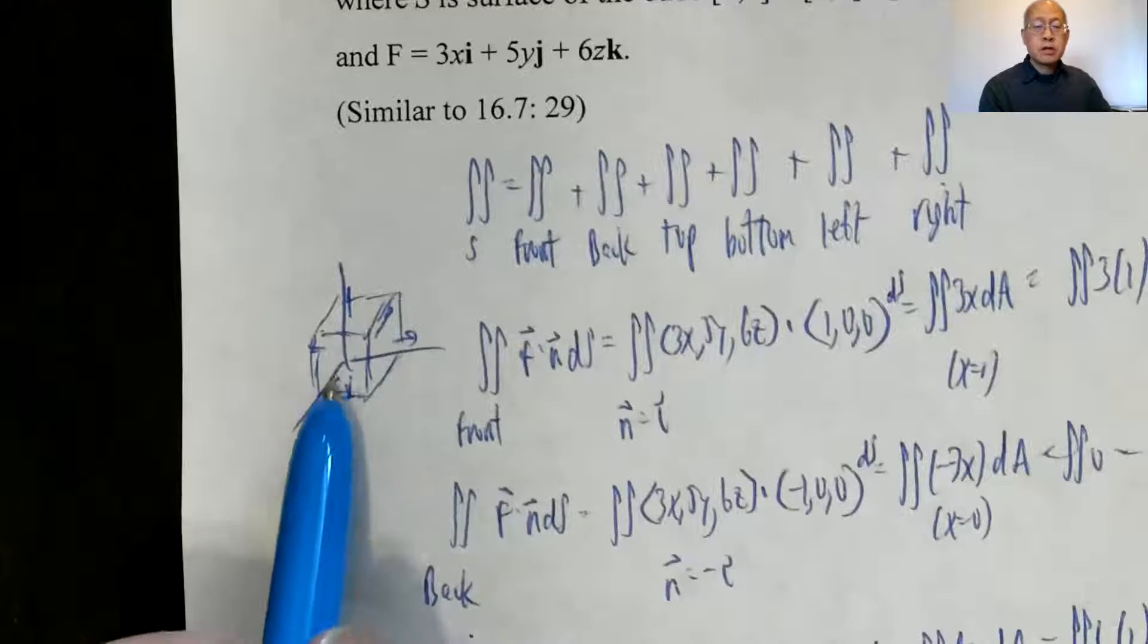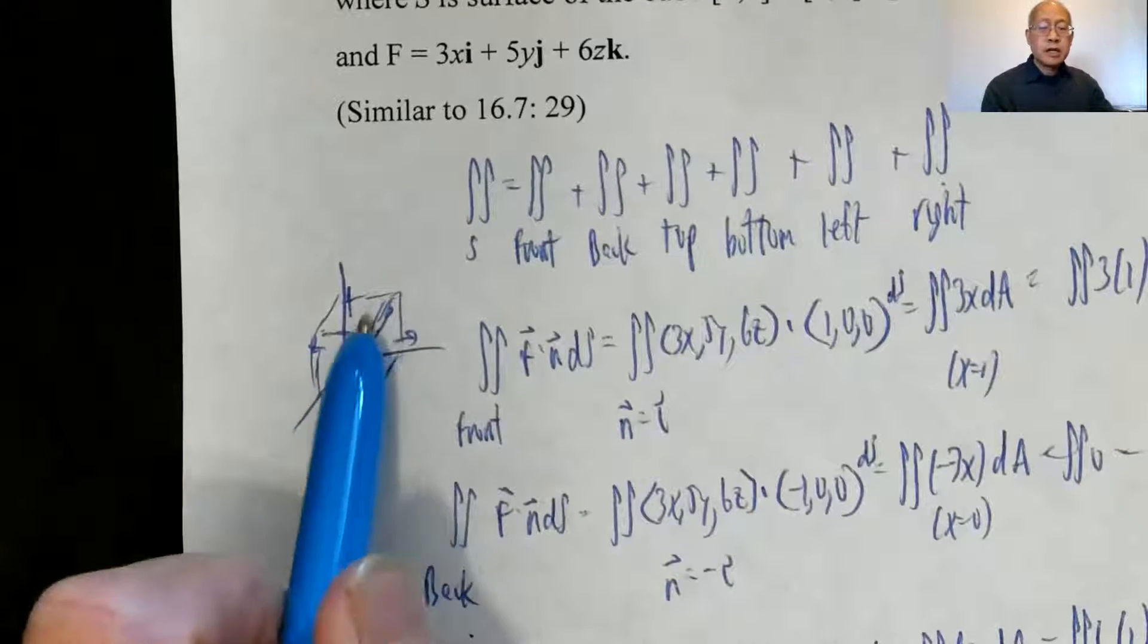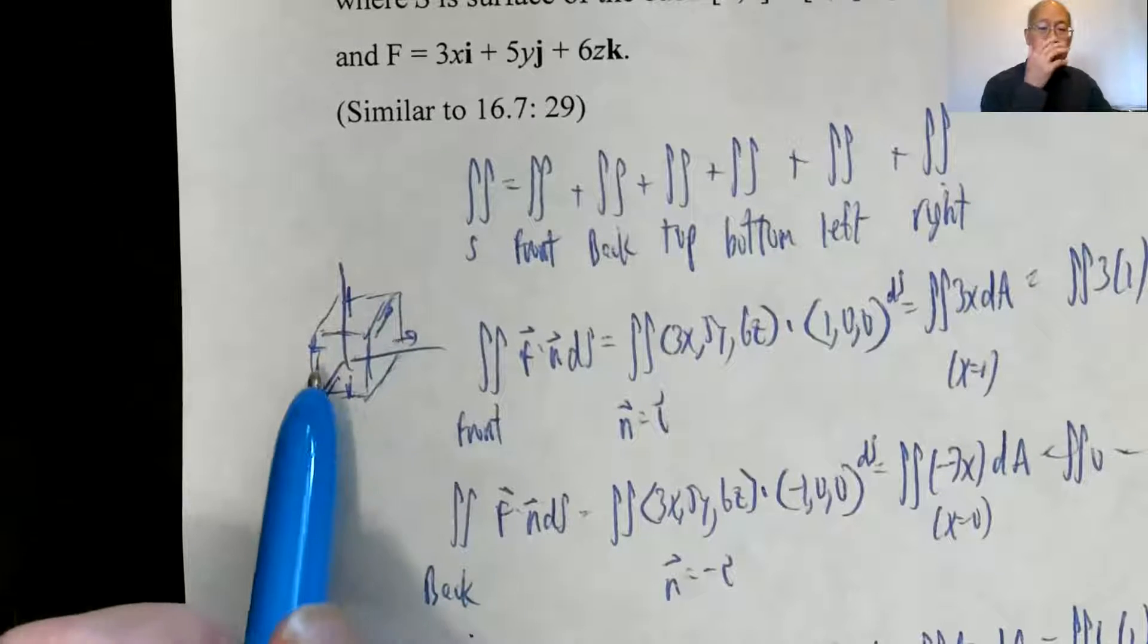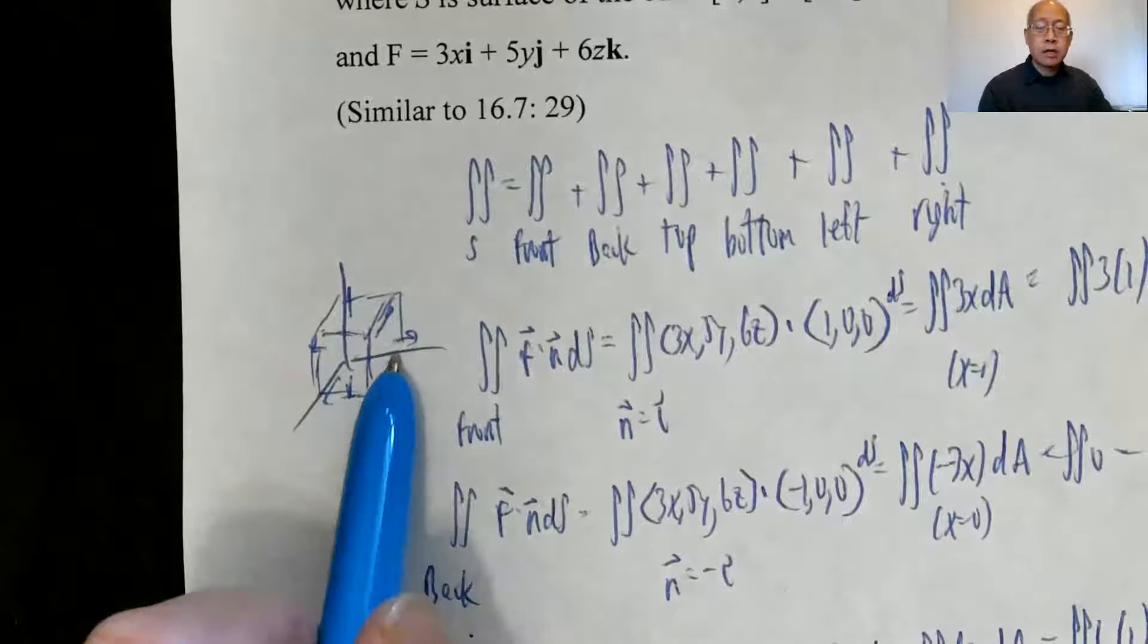The unit normal vectors: the front is i, the back is negative i, top is k, bottom is negative k, left is negative j, and right is j.